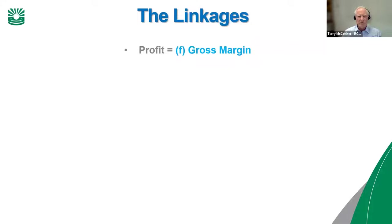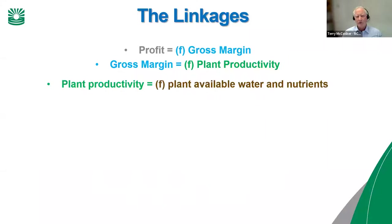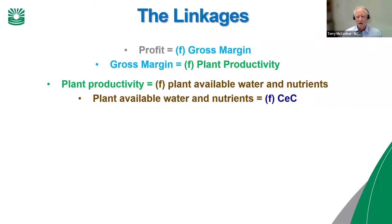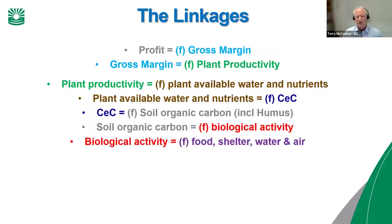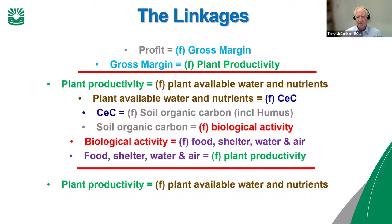In any business — cropping or grazing — gross margin is a major determinant of profitability. Gross margin is a function of plant productivity, which is a function of plant available water and nutrients. Plant available water and nutrients is a function of cation exchange capacity. Cation exchange capacity is a function of soil organic carbon, particularly the humic component. Soil organic carbon creation is a function of biological activity, which is a function of the food, shelter, water, and air we provide for that biology.